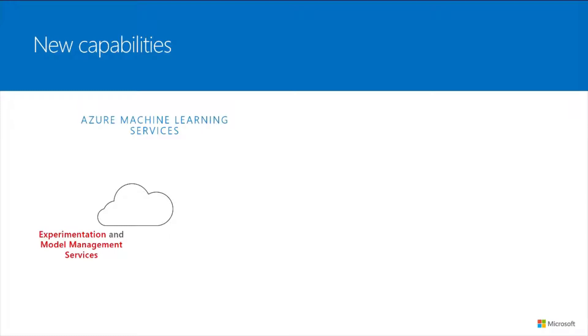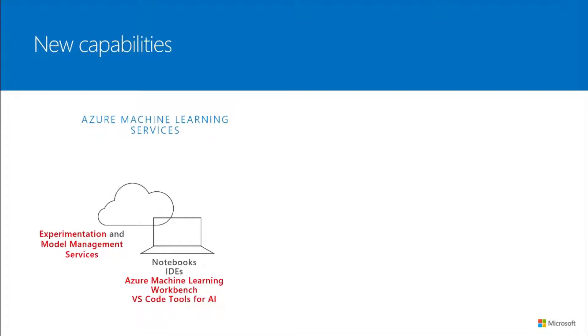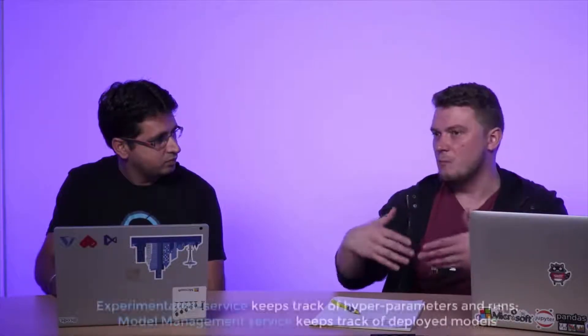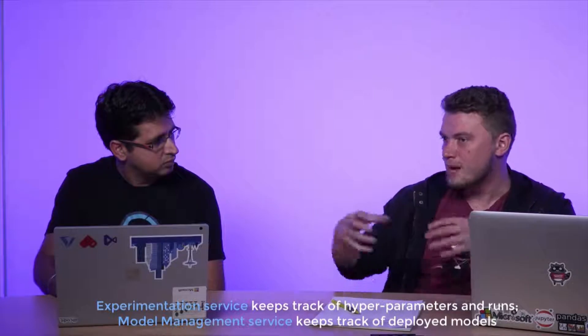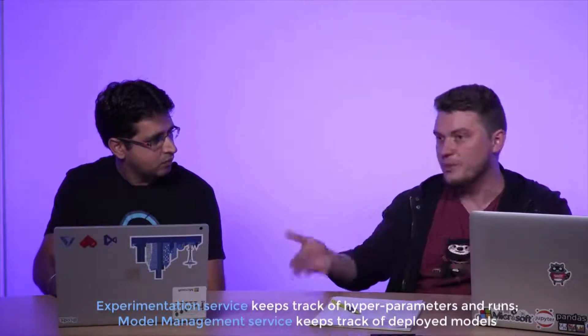What you are seeing here is a set of what we call Azure Machine Learning Services — experimentation and model management services. We are also releasing Azure Machine Learning Workbench, which is a desktop application. The same capabilities that Azure Machine Learning Workbench provides, we are adding to an extension inside Visual Studio Code Tools for AI. Developers who are already using those IDEs can use those additional plugins to write Python code, and the model management system will help them manage all of those runs and keep track of their experimentations.